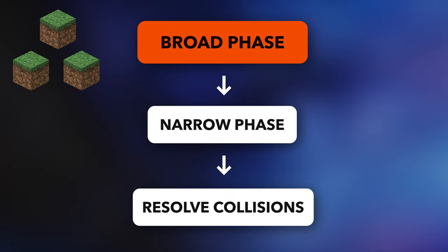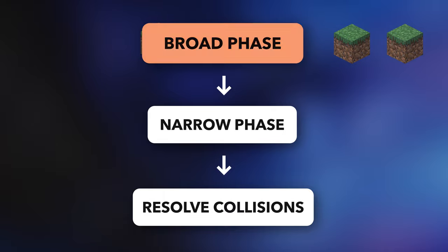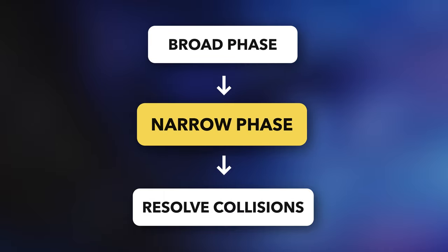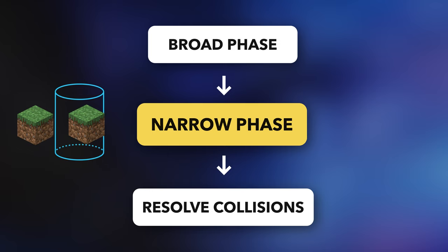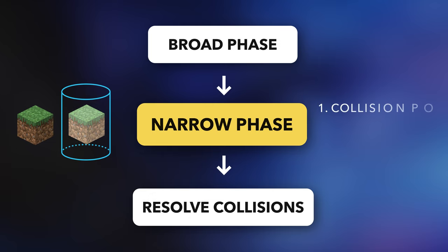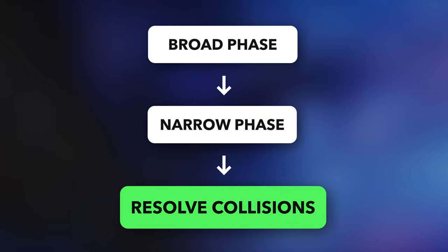In the broad phase, we filter down the list of blocks by finding the set of blocks closest to the player. In the narrow phase, we take the candidate blocks from the broad phase and check if any collide with our player's bounding cylinder. If they do, we calculate the point of collision, the overlap between the block and the player, and the collision normal. In the final resolution stage, we take all collisions found in the narrow phase and process them one by one, adjusting the player's position so it's no longer colliding and zeroing out the player's velocity in the direction of the collision normal.